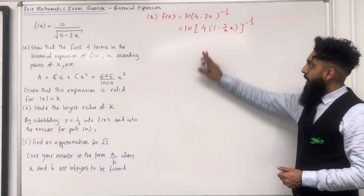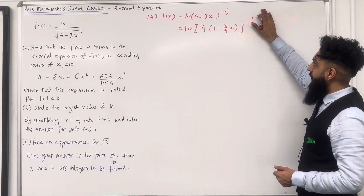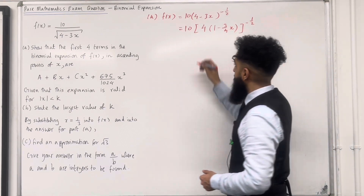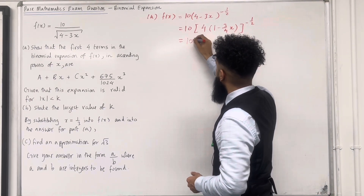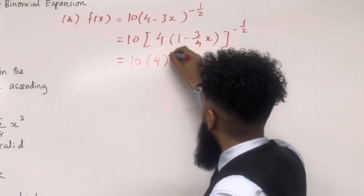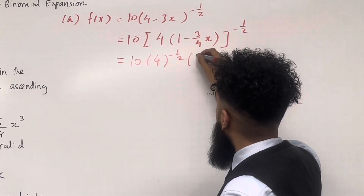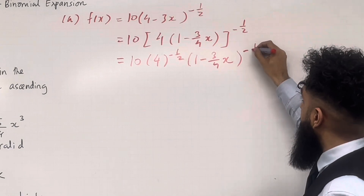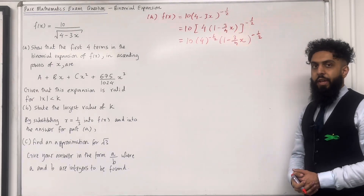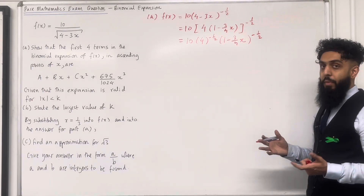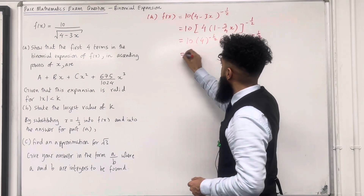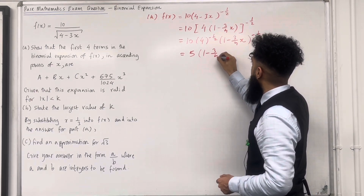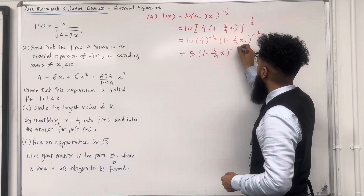Now we can take 4 and raise it to the power minus a half, then take this bracket raised to the power minus a half. This gives us 10 multiplied by 4 to the power minus a half, multiplied by 1 minus 3 over 4 x, in bracket, to the power minus a half. Now 10 multiplied by 4 to the power minus a half is just 5. So we've got 5 multiplied by (1 minus 3 over 4 x) to the power minus a half.